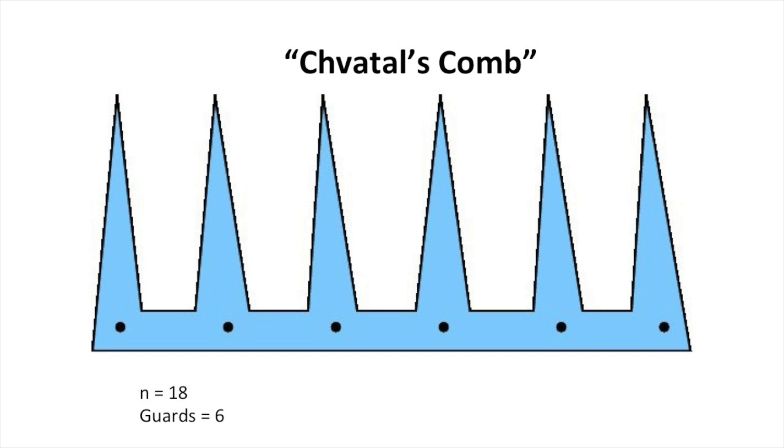This polygon with six triangular sections, known as Schwadl's comb, has 18 corners and requires six guards. No matter how many of these triangular sections we have, we will always need one guard for each section and have three times as many corners. This shows that the art gallery theorem cannot be made any stronger.